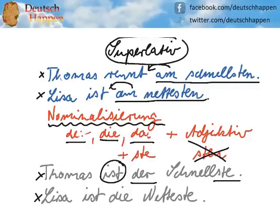Same with Lisa: Lisa ist die Netteste. My verb is simply ist. Lisa is a girl or a woman, therefore die and S-T-E at the end. Lisa is the nicest — the nicest girl, the nicest colleague, whatever. She is the nicest. Lisa ist die Netteste.